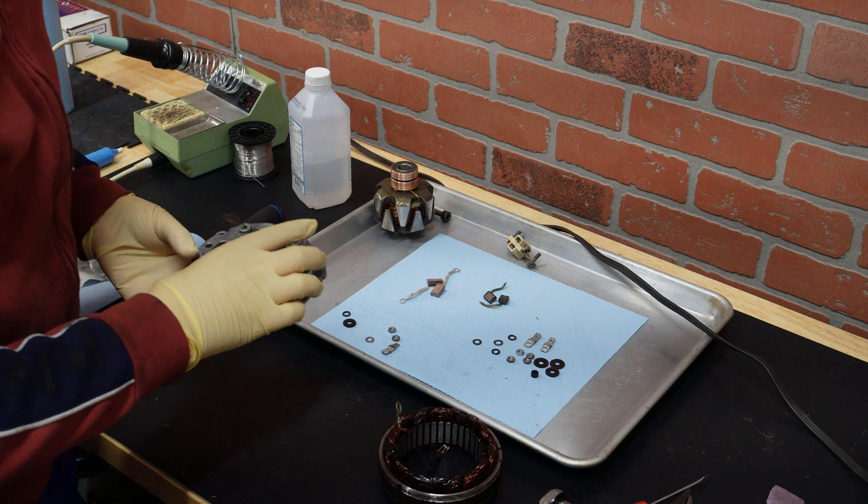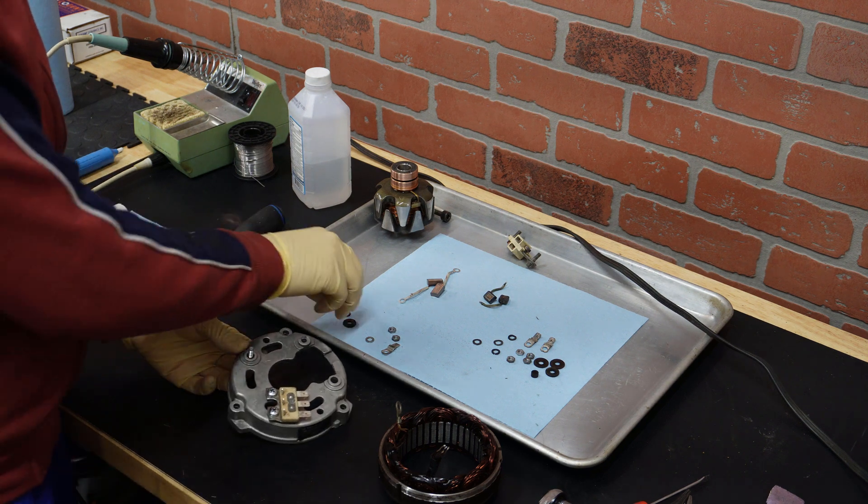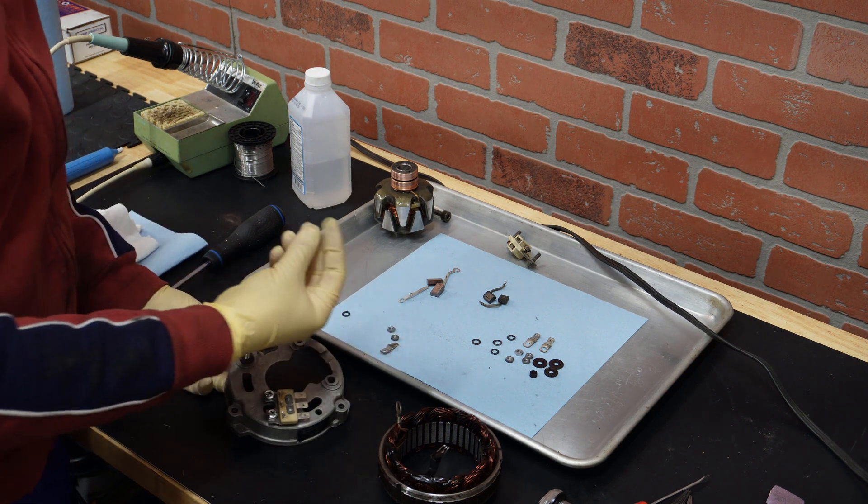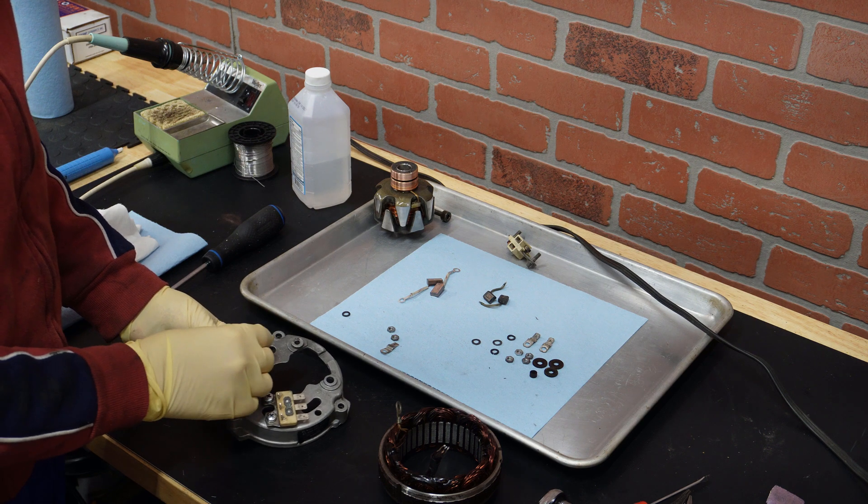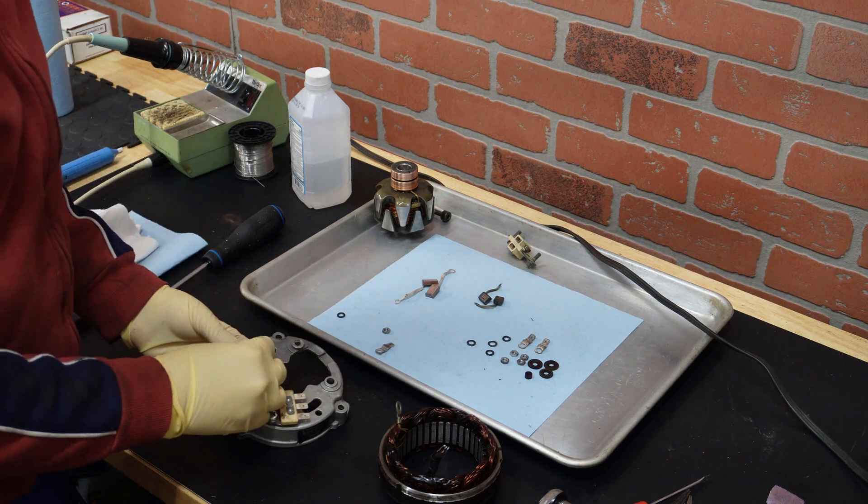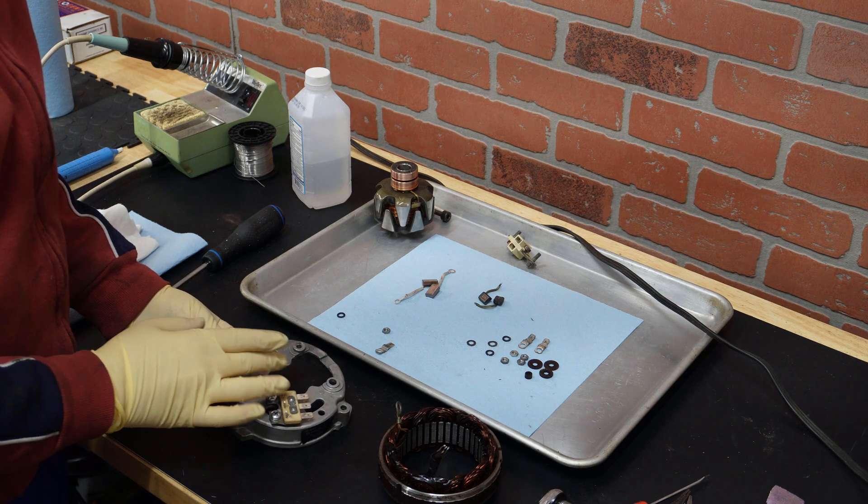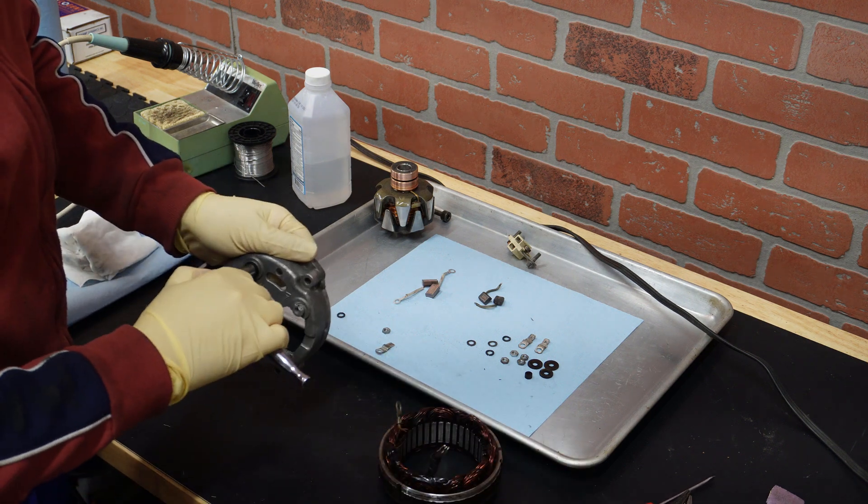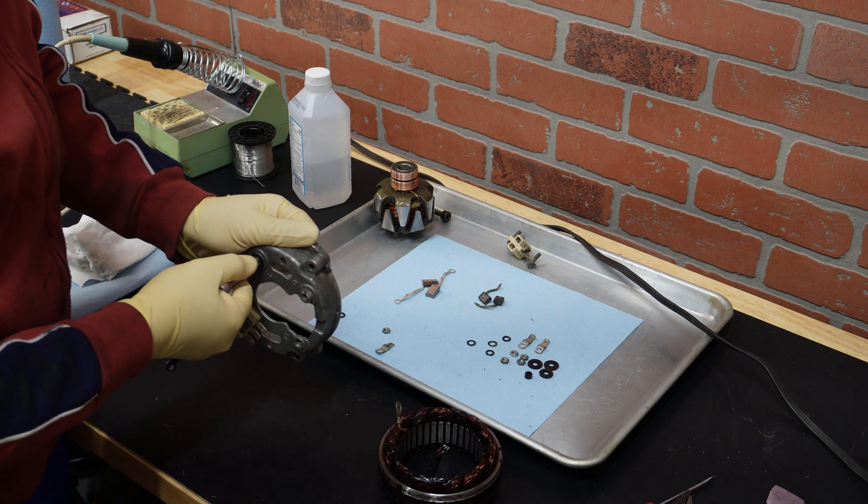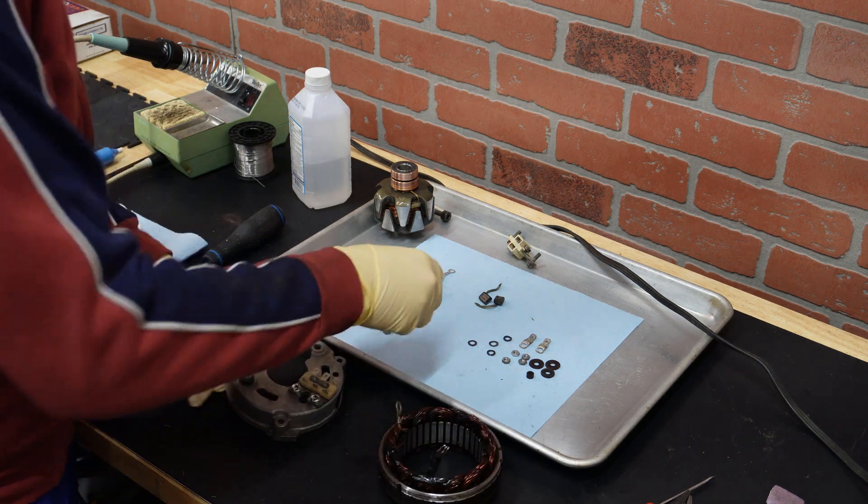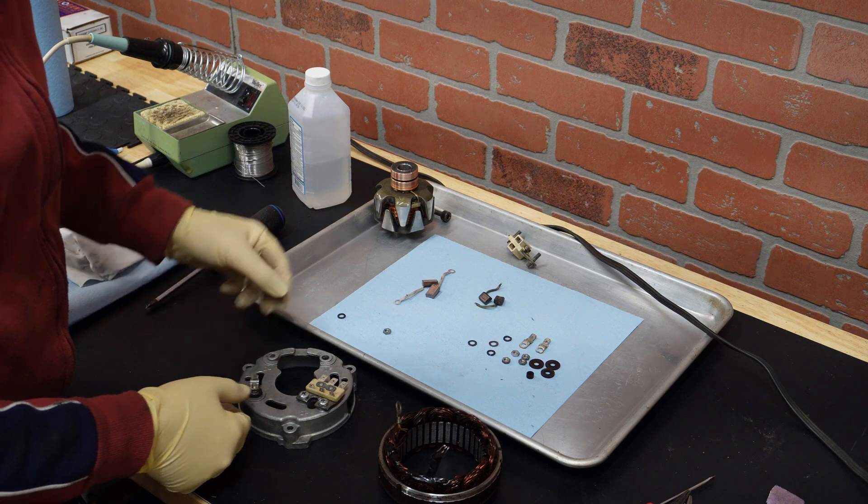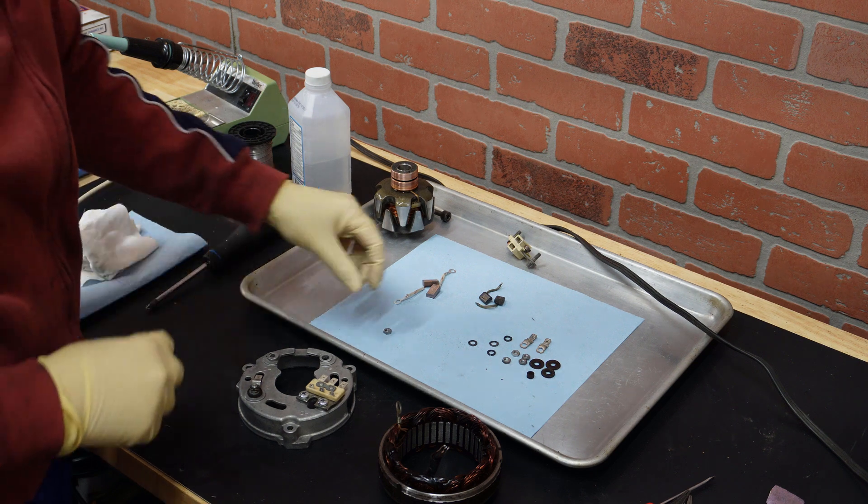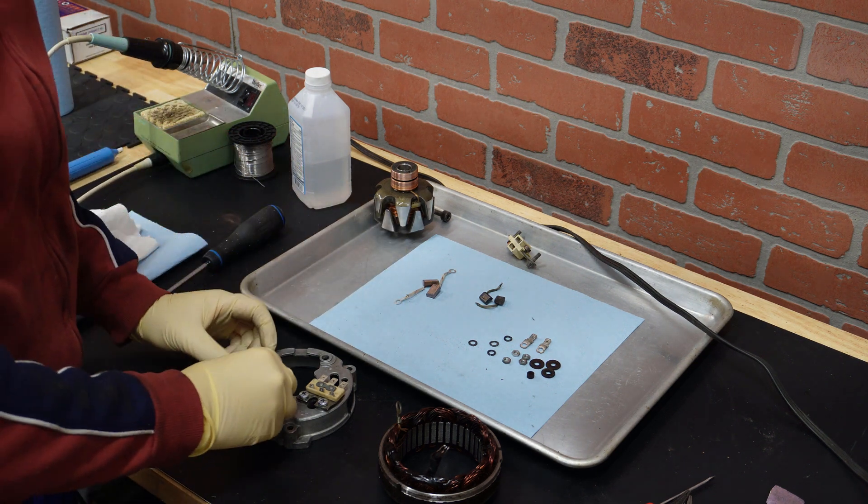Now from the top we will put another washer, and then there is a steel washer and a nut. We will tighten this, and now we put the spade terminal, another crush washer, and the nut.